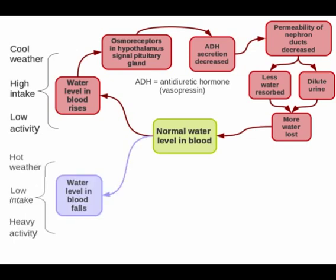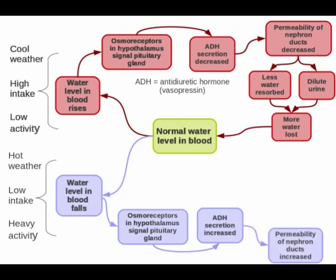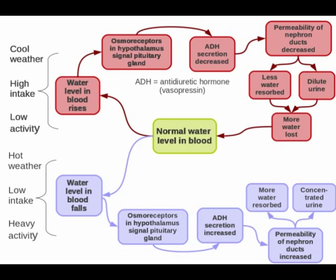What happens if the water level in the blood falls — for example, in hot weather when we're sweating a lot, we don't drink very much fluid, or we're exercising a lot? The osmoreceptors in the hypothalamus — a kind of water stat — signal the pituitary gland again, and ADH (antidiuretic hormone or vasopressin) secretion is increased. This causes the permeability of the nephron ducts to be increased. With increased permeability, more water is reabsorbed, so less water is lost in the collecting ducts and carried to the ureter and bladder. We have a more concentrated urine, and because less water is lost, we restore the normal water level in the blood.